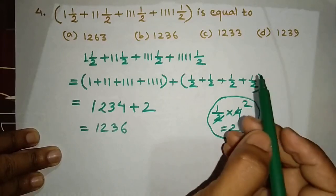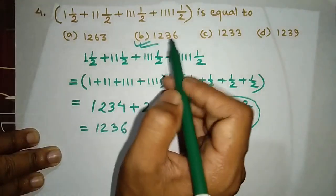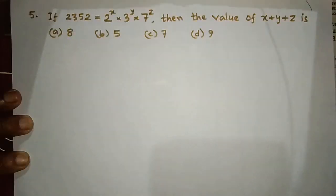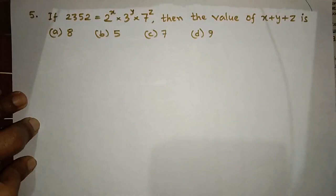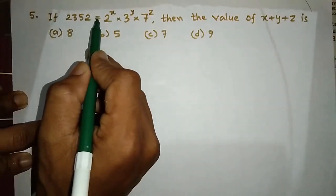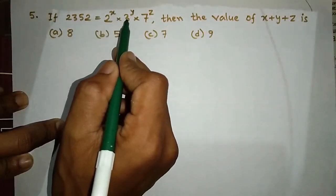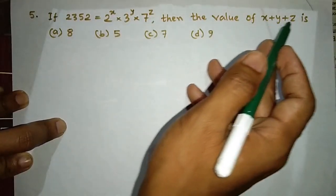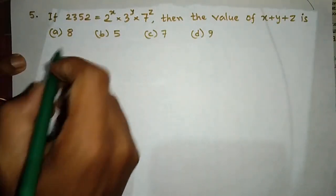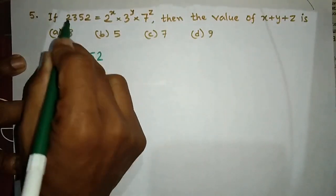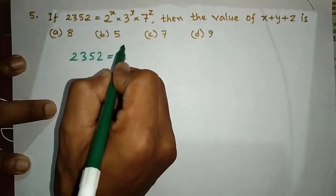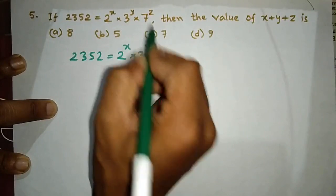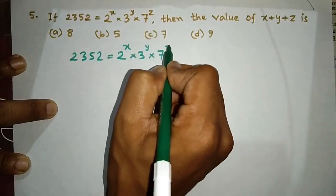The number options are 1, 2, 3, 6. If 2 to the power 3, times 5 to the power 2, equals 2 to the power x, into 3 to the power y, into 7 to the power z, then find the value of x plus y plus z.